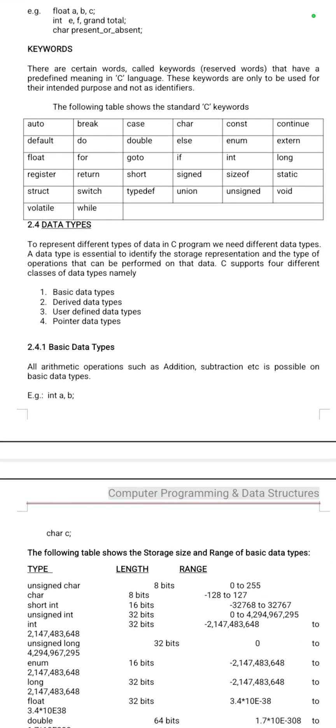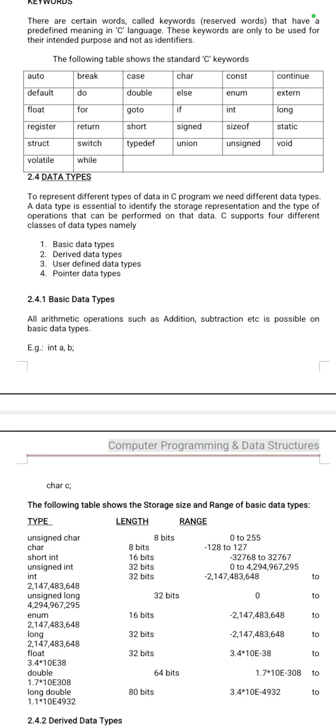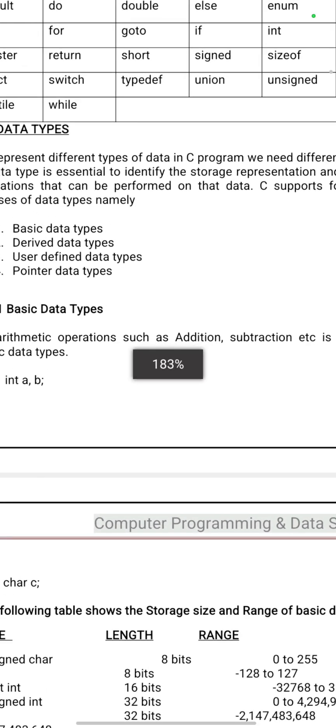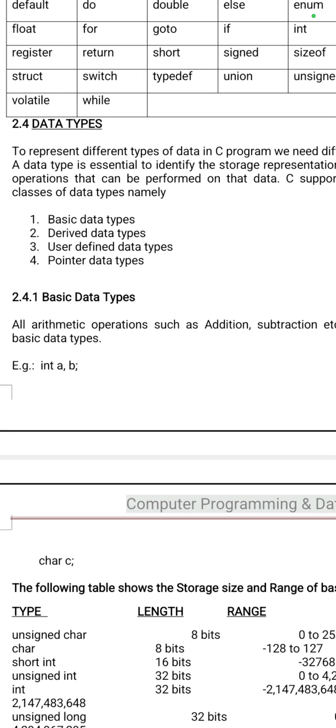A very important question is data types. What is a data type? It means the type of data — which type of data you want to store in a variable. These are the four different data types: basic data type, derived data types, user-defined data types, and pointer data type.